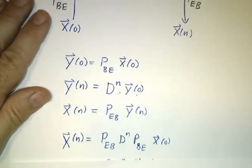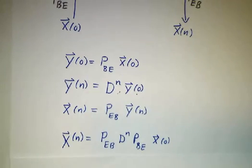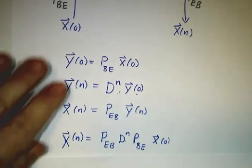x of n was P e b times y of n. And if you put them all together, you see that it's P e b d to the n P b e times x of 0. And that is A to the n.